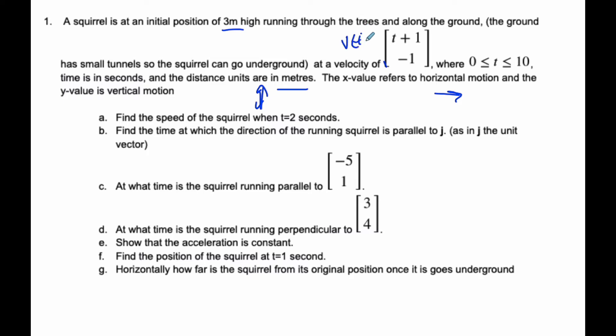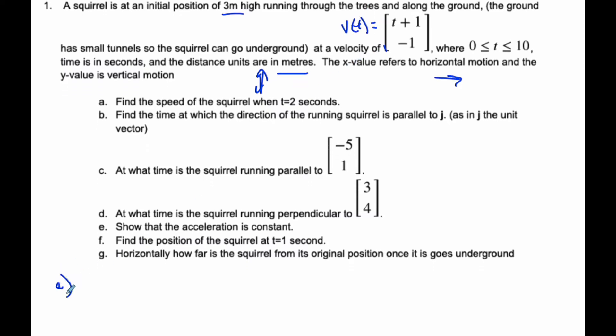So we're asked to find the speed of the squirrel at t=2 seconds. Well, we are told that this is the velocity at given time t. So if I want to find v at 2, it's simply going to be 2 plus 1 is 3, minus 1. And so that's the velocity vector. If I want to find the speed, that's going to be the absolute value, the magnitude of that, which is going to be the square root of 3 squared plus a negative 1 squared. If I throw it in my calculator, I end up with 3.16 meters per second is the speed of our little squirrel.